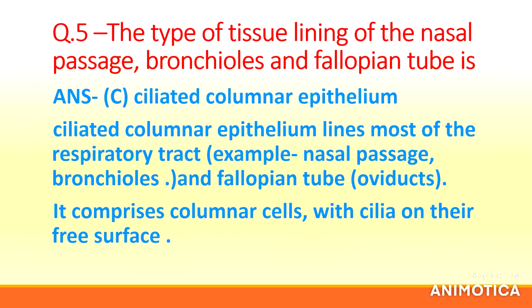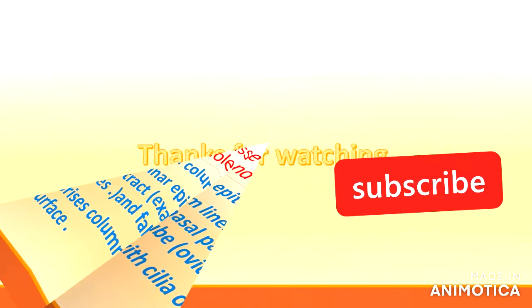Explanation: Ciliated columnar epithelium lines most of the respiratory tract, for example, the nasal passage, bronchioles, and fallopian tube (oviducts). It comprises columnar cells with cilia on their free surface. Thanks for watching, please subscribe to my channel and press the bell icon.